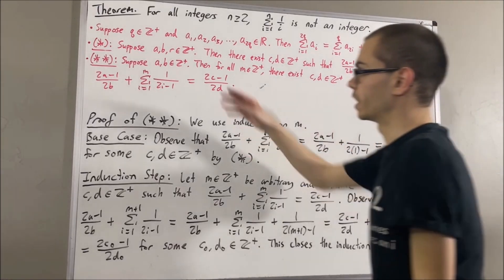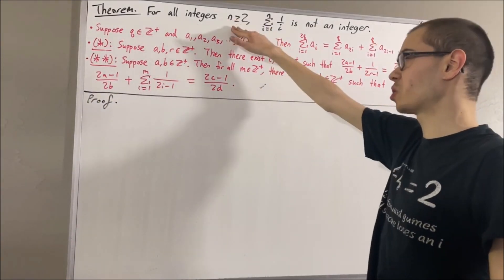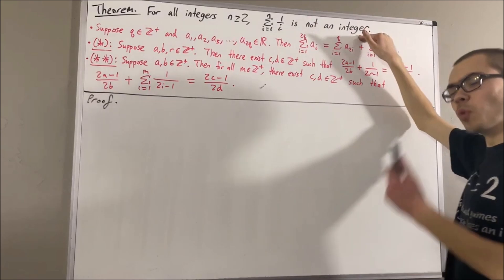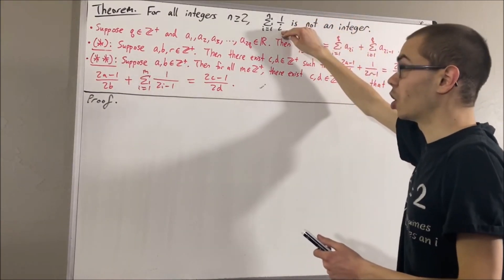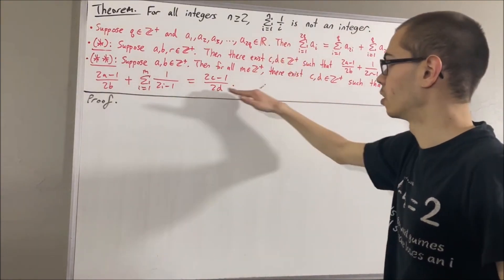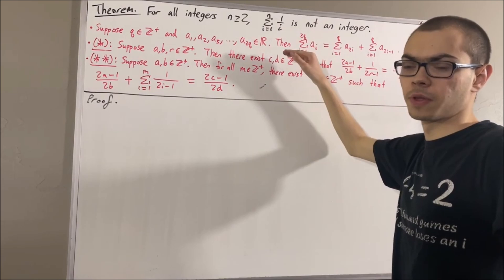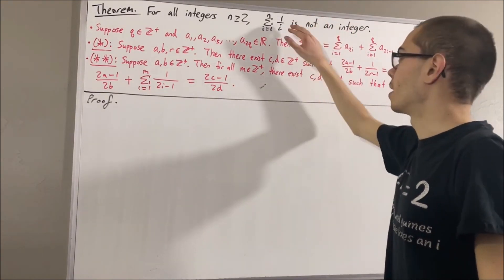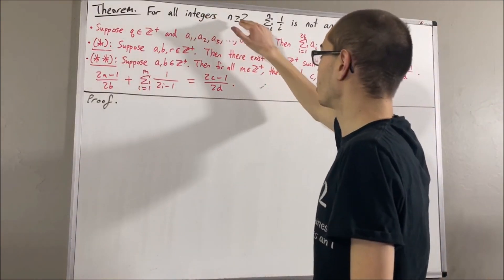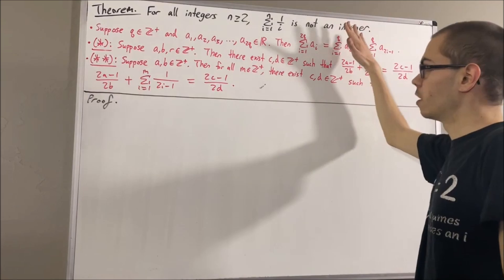Okay, so now let's get into proving the main theorem. We want to establish for all integers n greater than or equal to 2, 1 plus 1/2 plus 1/3 plus dot dot plus 1/n is not an integer. More specifically, we're going to show that this expression can always be expressed in the form of an odd integer over an even integer. That will immediately imply the expression cannot be an integer. By strong induction, we will show for all integers n ≥ 2 that the sum from i equals 1 to n of 1/i equals (2a − 1)/2^b for some positive integers a and b.